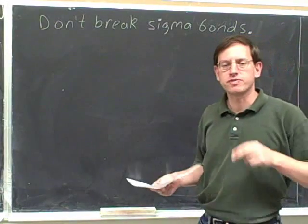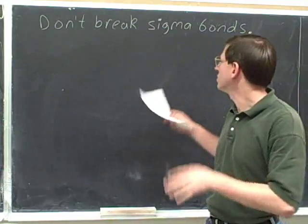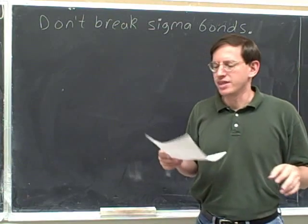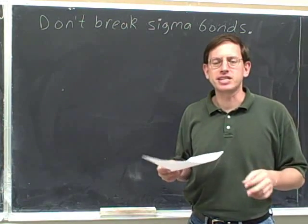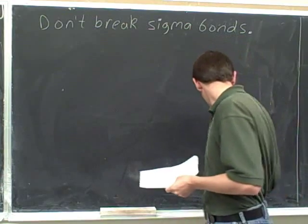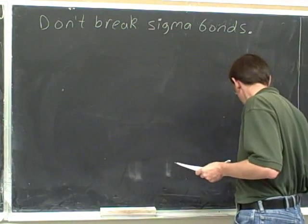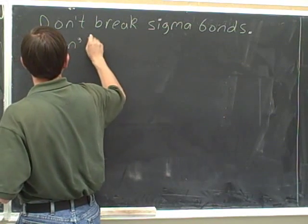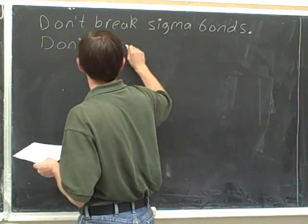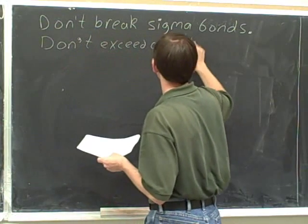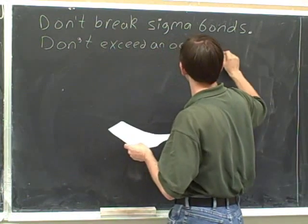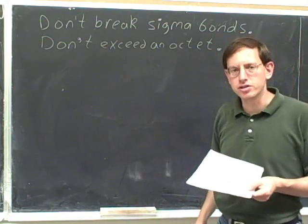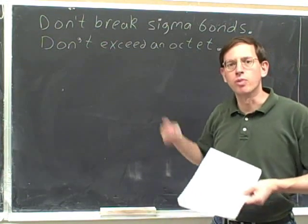One of the major rules for drawing resonance structures is don't break sigma bonds. Another major rule is that you are not allowed to exceed an octet. You don't want to draw electron pushing arrows that would end up giving an atom more than an octet.